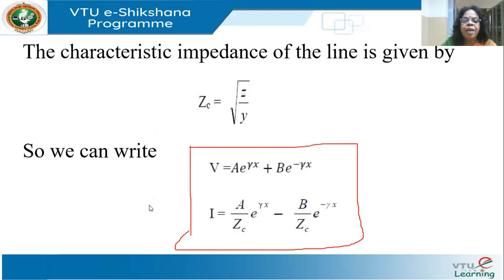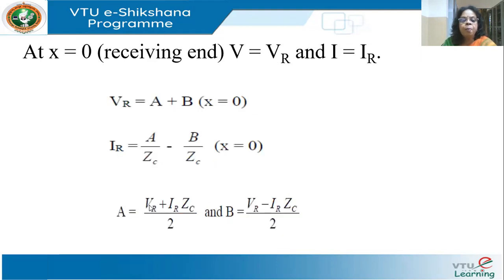Solving these two equations for the constants A and B: A = (VR + IR·ZC)/2 and B = (VR - IR·ZC)/2. These coefficients allow us to write the general solution in terms of the known receiving end quantities VR and IR.